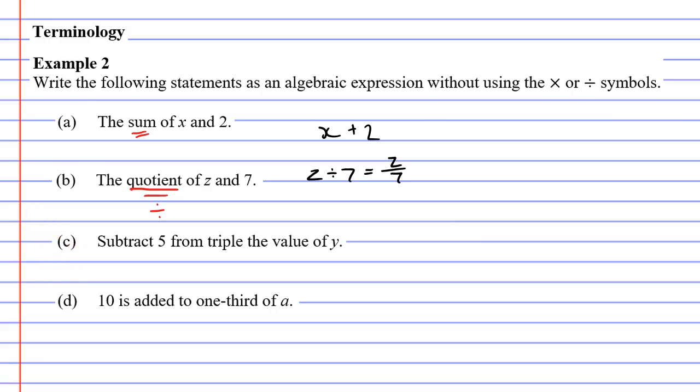Now moving on to question C which says to subtract 5. Subtract just means to minus 5. And it's also asking us to triple the value of y. Now to triple means to multiply by 3. So I'm going to take my pronumeral y. I'm going to multiply it by 3 and I'm also going to subtract 5. Now I want to rewrite this because we don't like to use the multiplication symbol. Y times 3 can be rewritten as 3y. And then we put our minus 5 at the end of that.